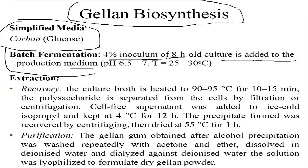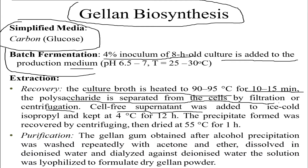The recovery process is carried out by heating the culture broth to 90–95 degrees for 10–15 minutes. The polysaccharide is then separated from the cells by filtration or centrifugation. The cell-free supernatant is added to ice-cold isopropyl alcohol and kept at four degrees for 12 hours. The precipitate formed is recovered by centrifugation and dried at 55 degrees for one hour.